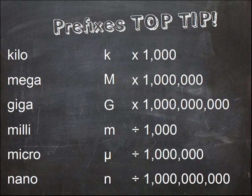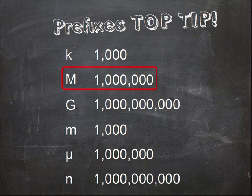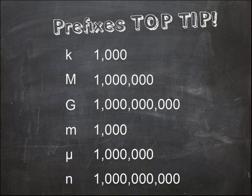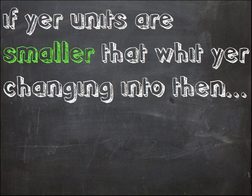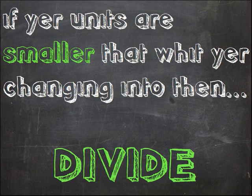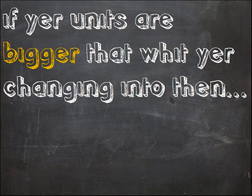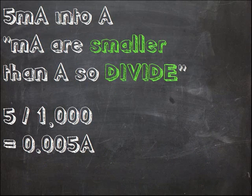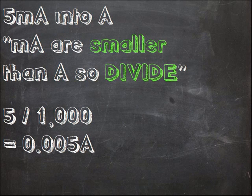Here's my wee top tip for you. Think about what number goes with a prefix — milli's a thousand, mega's a million and all that. Get your six numbers in your head and then do the following rule for unit conversions: if the units you have are smaller than what you want to change into, then divide by the number. So changing 5 milliamps into amps — milliamps are smaller than amps, so divide by a thousand.